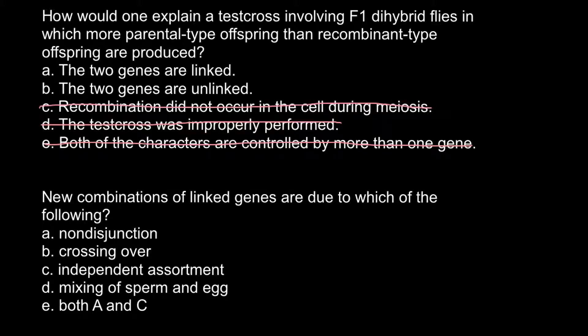Answer B is that the two genes are unlinked. As I already mentioned, when we have two unlinked genes, we would have segregation of the genotypes, so new recombinant genotypes would equal parental genotypes.